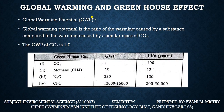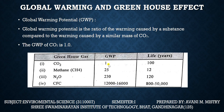Global warming potential (GWP) is the ratio of warming caused by a substance compared to the warming caused by a similar mass of CO2.